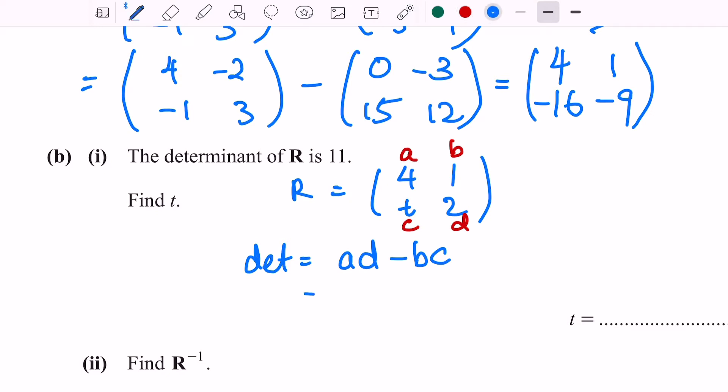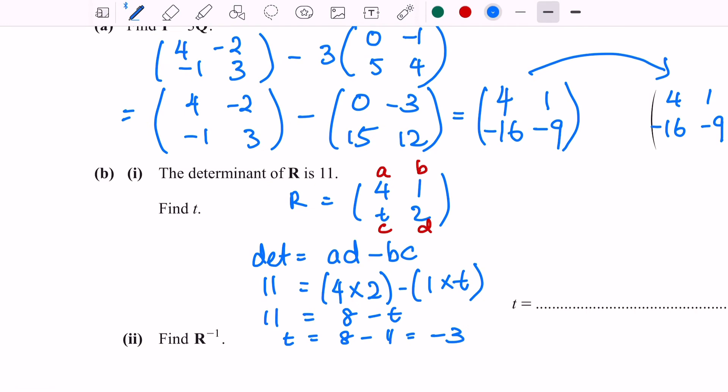Let us assign a is 4, d is 2, b is 1, t is c, equal to the determinant. The determinant is 11. By solving this equation, you should get -3. Therefore, t is -3.